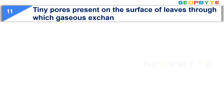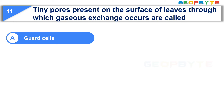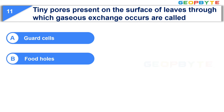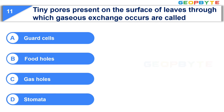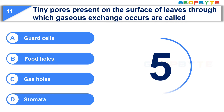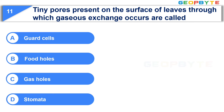Now let us see the eleventh question: Tiny pores present on the surface of leaves, through which gaseous exchange occurs, are called — Option A: Guard cells. Option B: Food holes. Option C: Gas holes. Option D: Stomata. Your time starts now. Your time is up and the correct answer is Option D: Stomata.